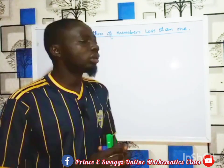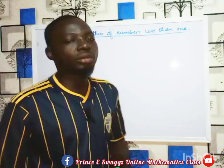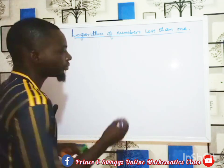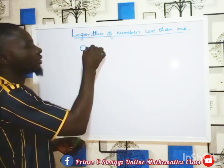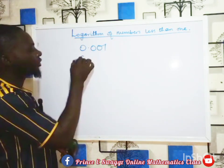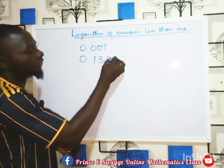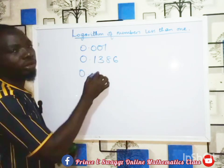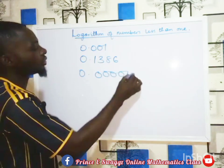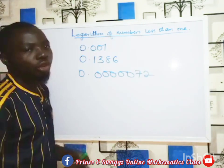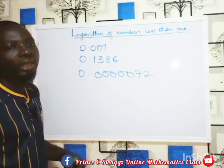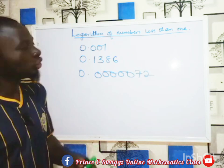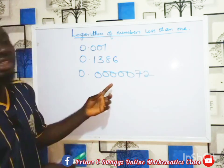For today, we are looking at numbers less than one. Examples include: 0.001, 0.1365, 0.61386, and 0.000072. All of these are examples of numbers less than one, and we will be finding their logarithms.